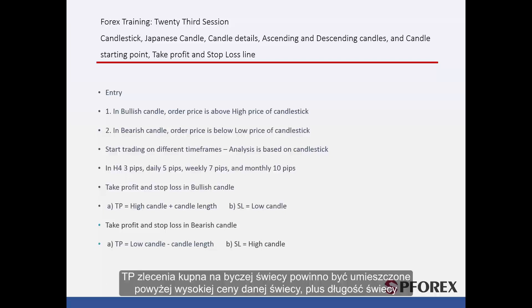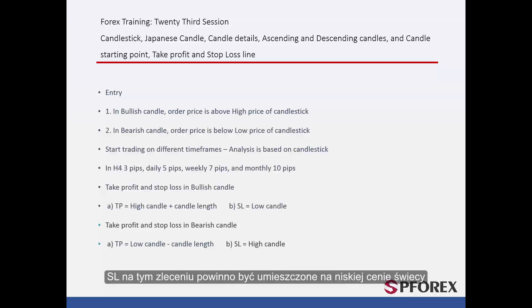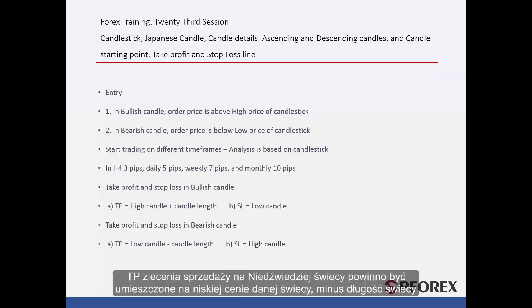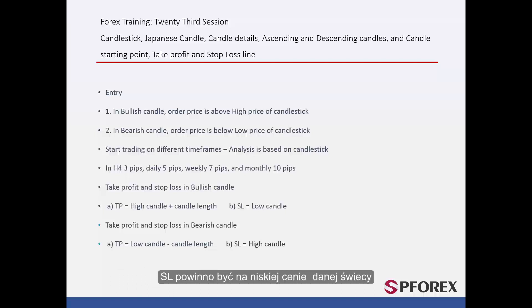The take profit (TP) of a buy order on a bullish candlestick would be placed above the high price of the given candle, plus the length of the candle. The stop loss (SL) on the order should be placed at the low price of the candlestick. The TP of a sell order on bearish candlesticks should be placed at the low price of the given candle minus the length of the candle. The SL should be on the high price of the given candlestick.